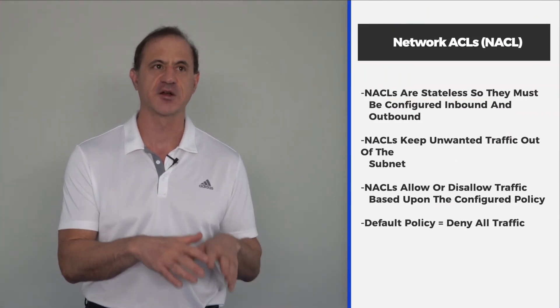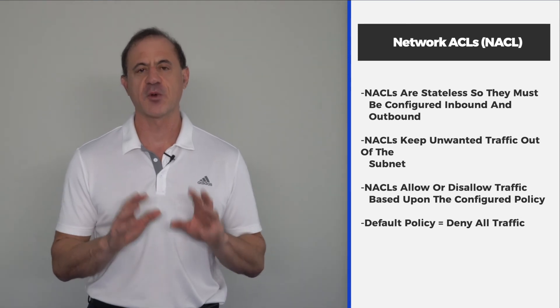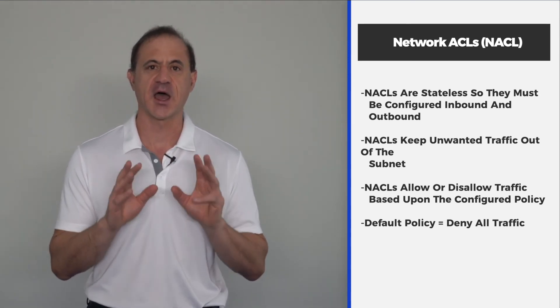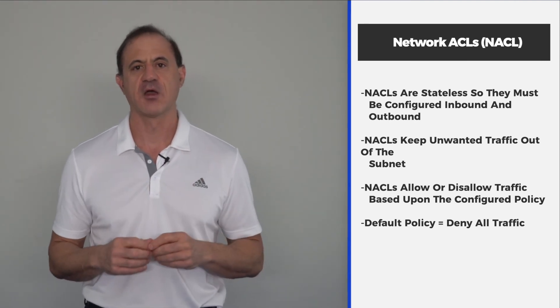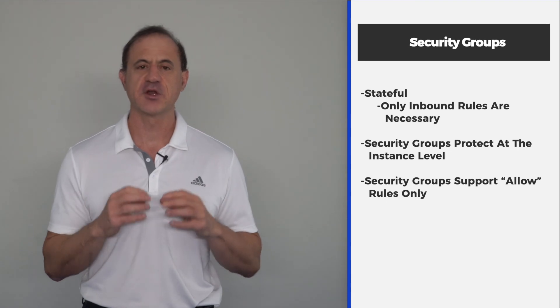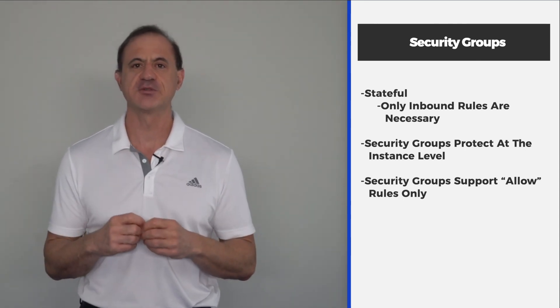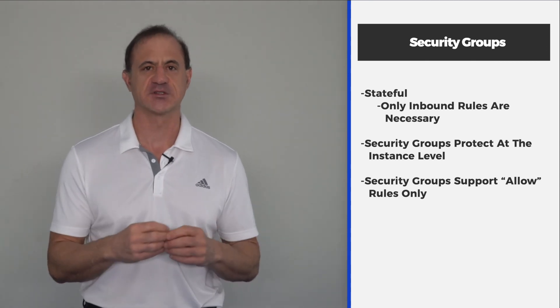The last two components are the network access list and security groups. A network access list is similar to an access list on a router — it's stateless, so rules must be defined for both inbound and outbound traffic. Network access lists are attached to the subnet, so they're about keeping traffic out of a subnet. Security groups, on the other hand, are a host-based firewall — they are stateful and are attached to a server or service like an EC2 instance. While the network ACL keeps traffic out of the subnet, the security group keeps unwanted traffic away from the individual system.